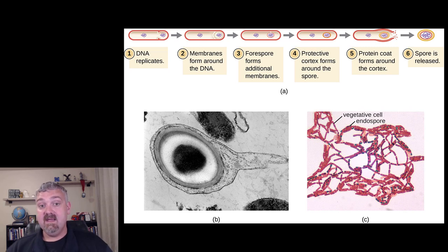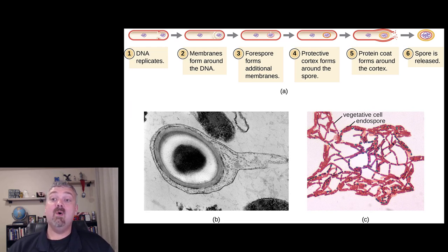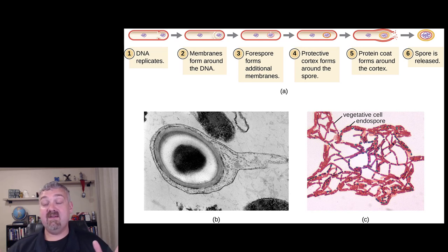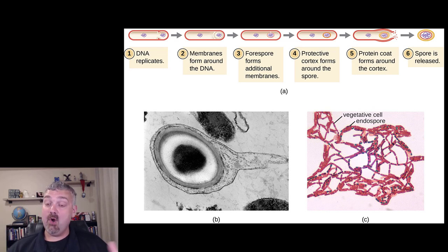How long spores can persist before they germinate is up for debate, but we know it's a very long time. Germination is the process of a spore regenerating into a living vegetative cell. We know that spores that are thousands of years old — 3,000 to 7,500 years old — have been germinated for certain. But there have been multiple reports of germinating spores that are millions of years old, from 2.5 million up to possibly 20, 30, or even 40 million years old.